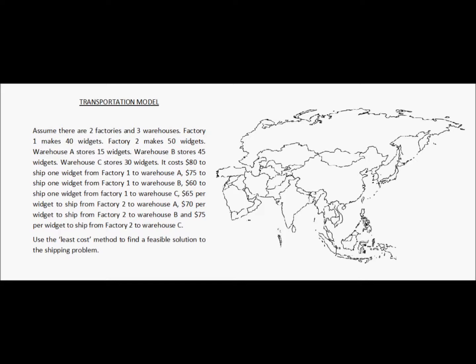There is a company which has two factories. The first factory is in India, let's call it F1, and the second factory is in China, let's call it F2. This company has decided to make Europe its market where it wants to sell these widgets, so it has three warehouses in various countries in Europe: warehouse A, warehouse B, and warehouse C.